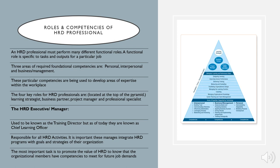Our next section covers roles and competencies of HRD professionals. An HRD professional must perform many different functional roles. A functional role is specific to tasks and outputs for a particular job. Three areas of required foundational competencies are personal, interpersonal, and business or management. These competencies are used to develop areas of expertise within the workplace. The four key roles of HRD professionals are learning strategist, business partner, project manager, and professional specialist, shown at the top of the blue pyramid.